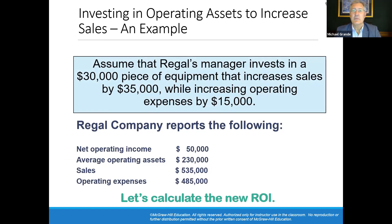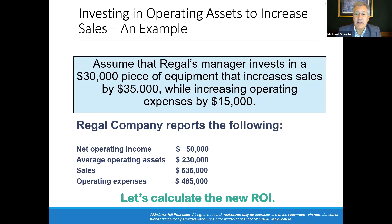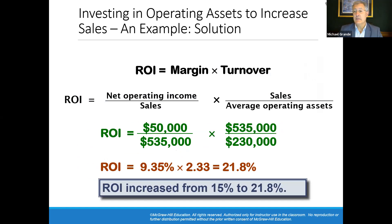Here's another example. Assume that Regal's manager invests in a $30,000 piece of equipment that increases sales by $35,000 while increasing operating expenses by $15,000. Our sales, operating expenses, and average operating assets have all gone up. After incorporating these changes and applying the margin times turnover formula — with sales canceling out — the return on investment increases from 15% to 21.8%. So the investment made sense: it improved return on investment.